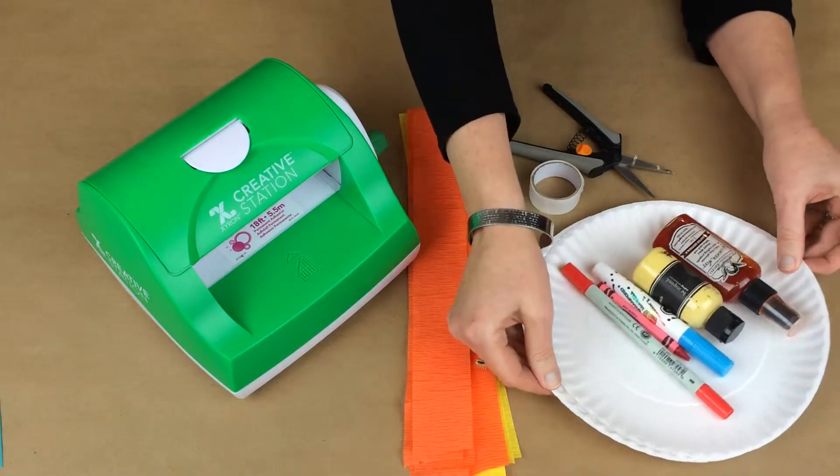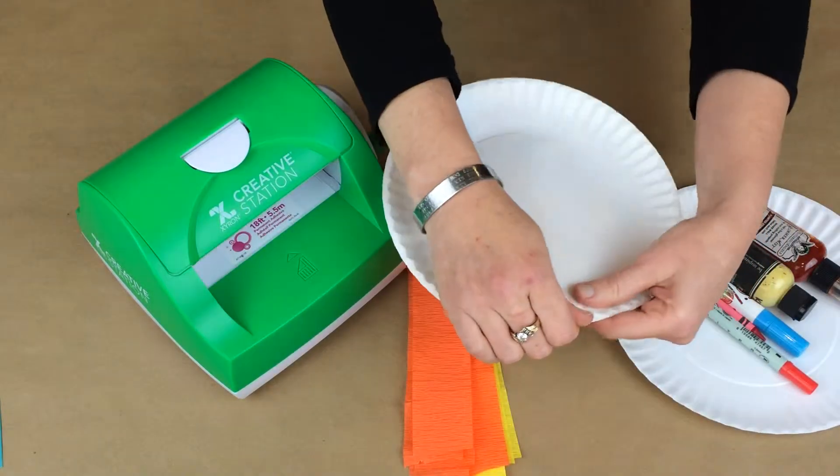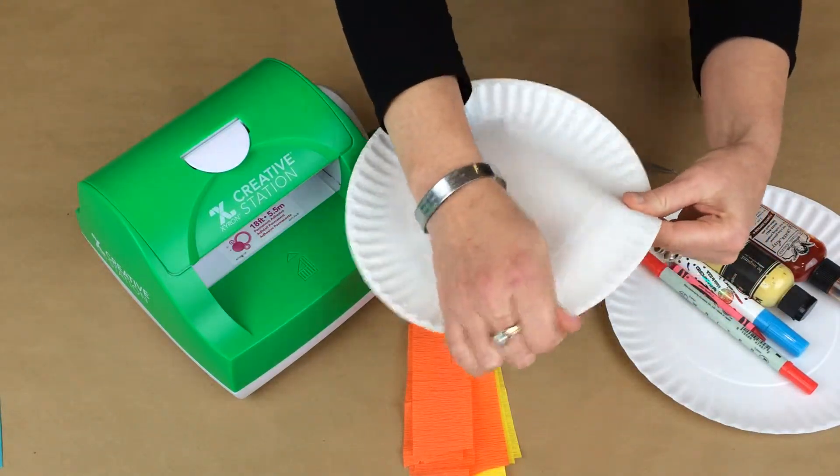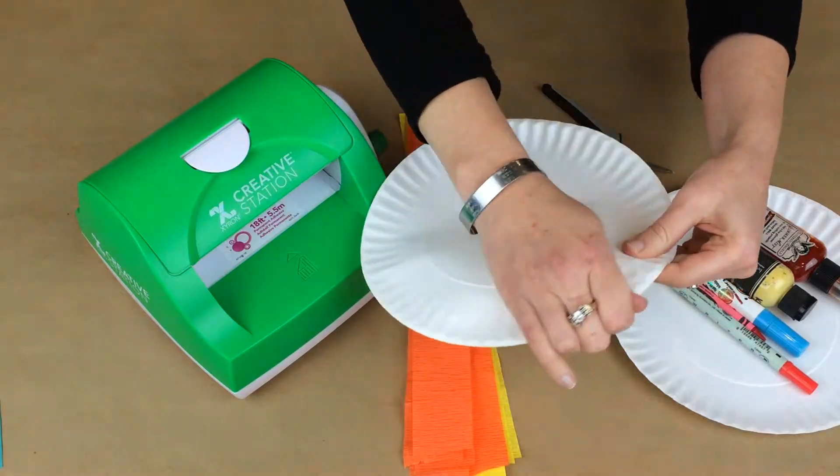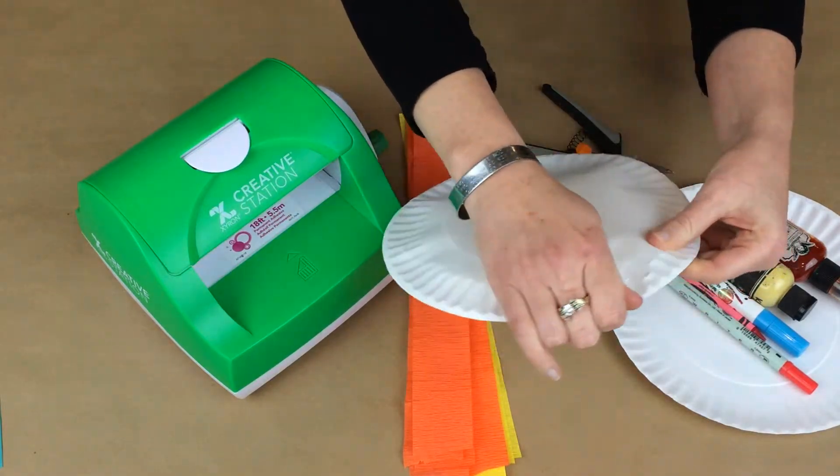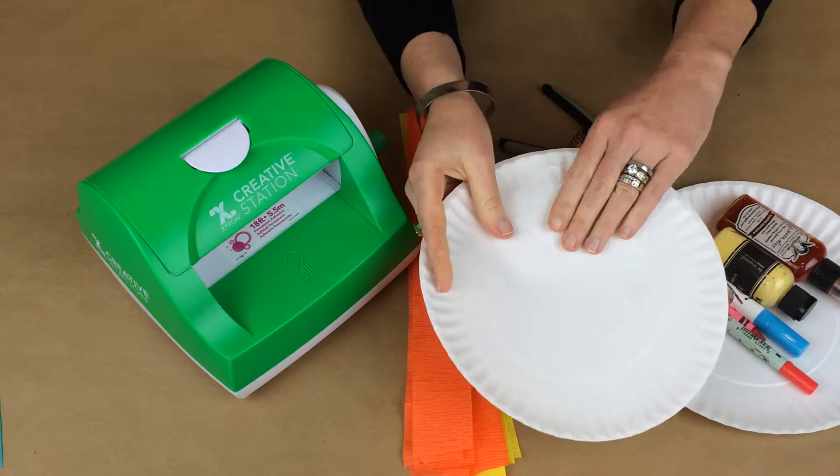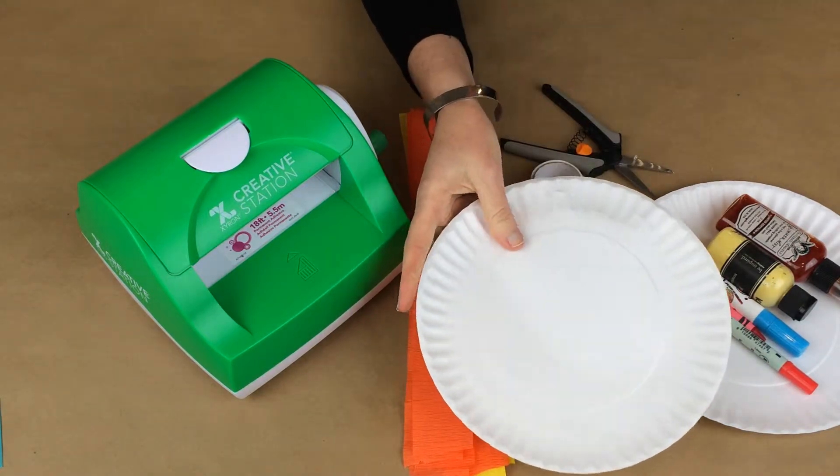So the first thing you're going to do is take your paper plate and just sort of run your hands along the edges. This isn't going to completely flatten it out but it's going to give you a little bit of a flatter surface, and then you're going to go ahead and color that however you'd like to.